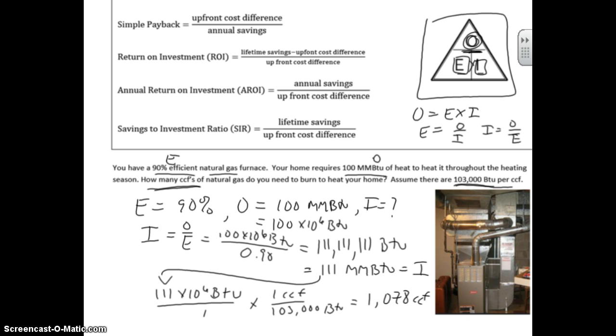If we know we need that much heat and we know how efficient our furnace is, we can tell the input. And then ultimately we can tell that we need a little over 1,000 CCFs. Now we could easily convert that to cost. Let's say it's $1.50 a CCF. We could multiply that to 1.5. But that is how you can use your efficiency equation to calculate the necessary input given an output and an efficiency.